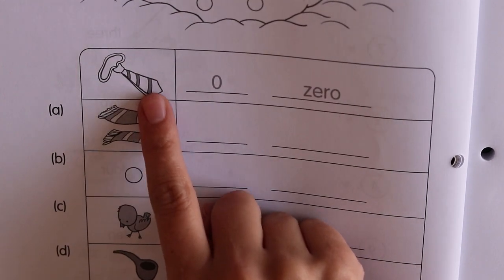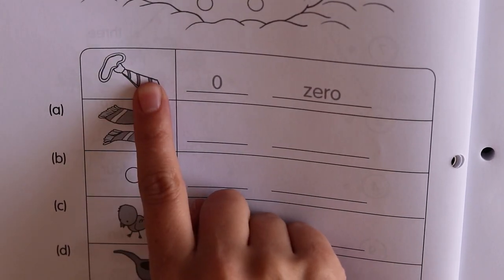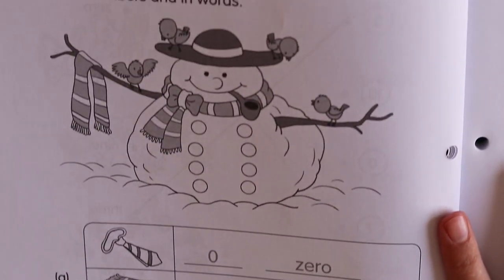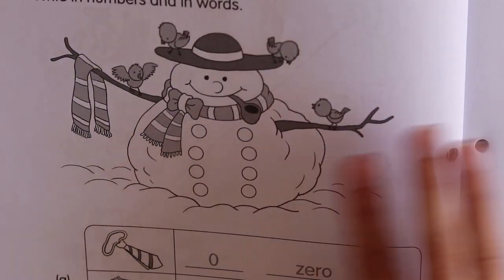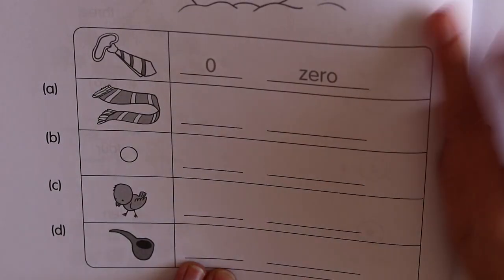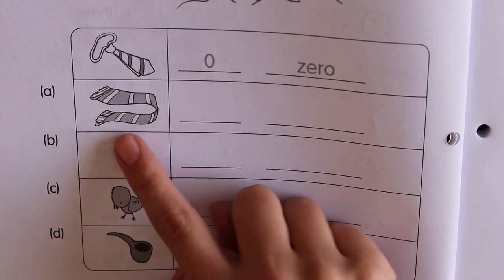So they've done the first one for us. He's not wearing a tie. So that's zero. The snowman does not have any ties. He's got zero ties. So they wrote zero. And they write the word zero. So you need to do the same.